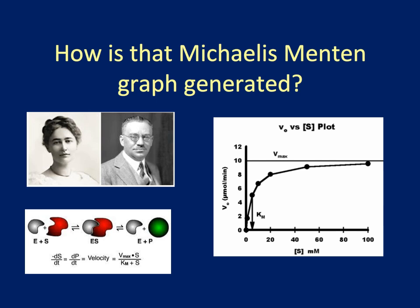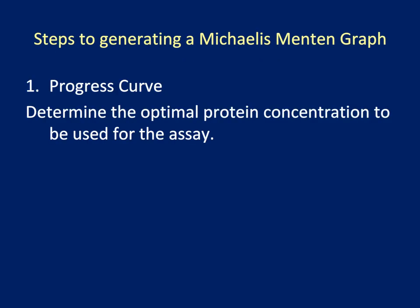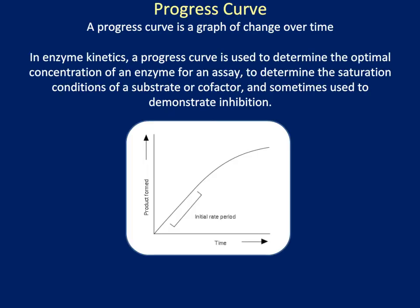It was developed by Maud Menten on the left and Leonor Michaelis on the right. The first step is to calculate the optimal protein concentration required for the assay. For this, we use progress curves. A progress curve is a graph of an observable's change over time. In enzyme kinetics, a progress curve is used to determine the optimal concentration of enzyme for an assay, to determine the saturation conditions of a substrate or cofactor, and sometimes used to demonstrate inhibition.